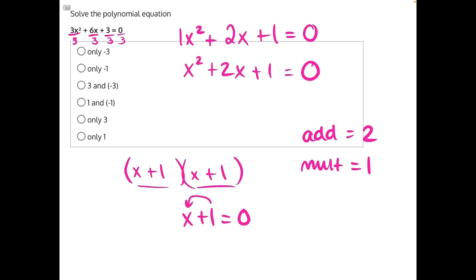1 is being added to x, so the opposite operation is to subtract 1 from both sides. These will cancel, leaving us with x is equal to negative 1, making answer choice B our correct answer.